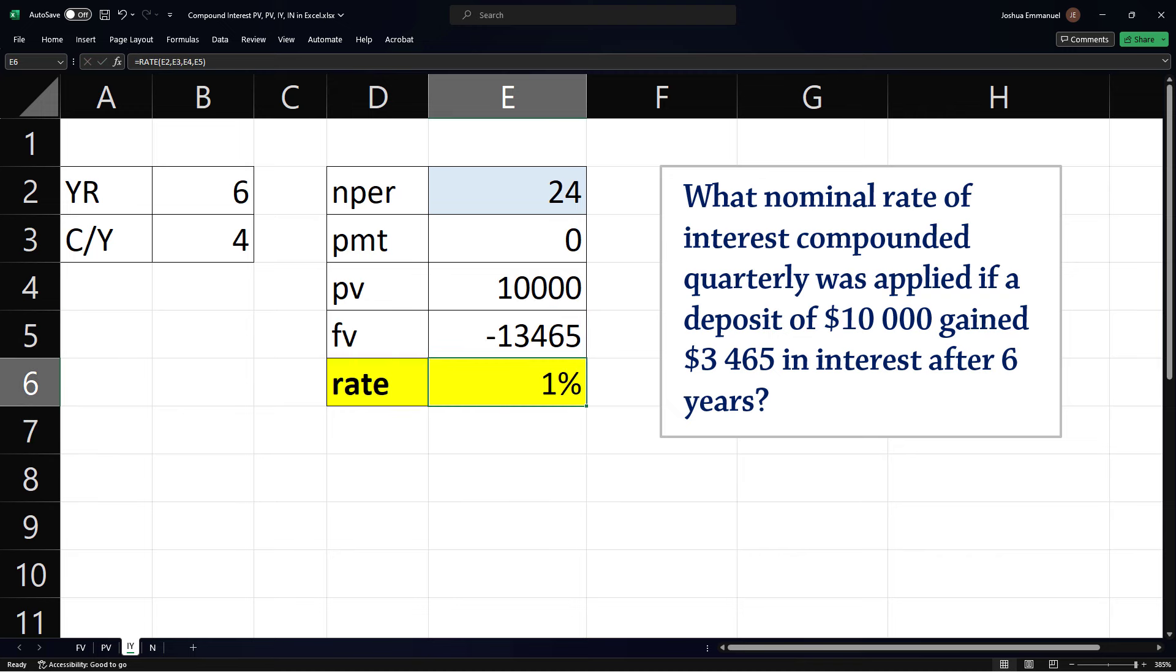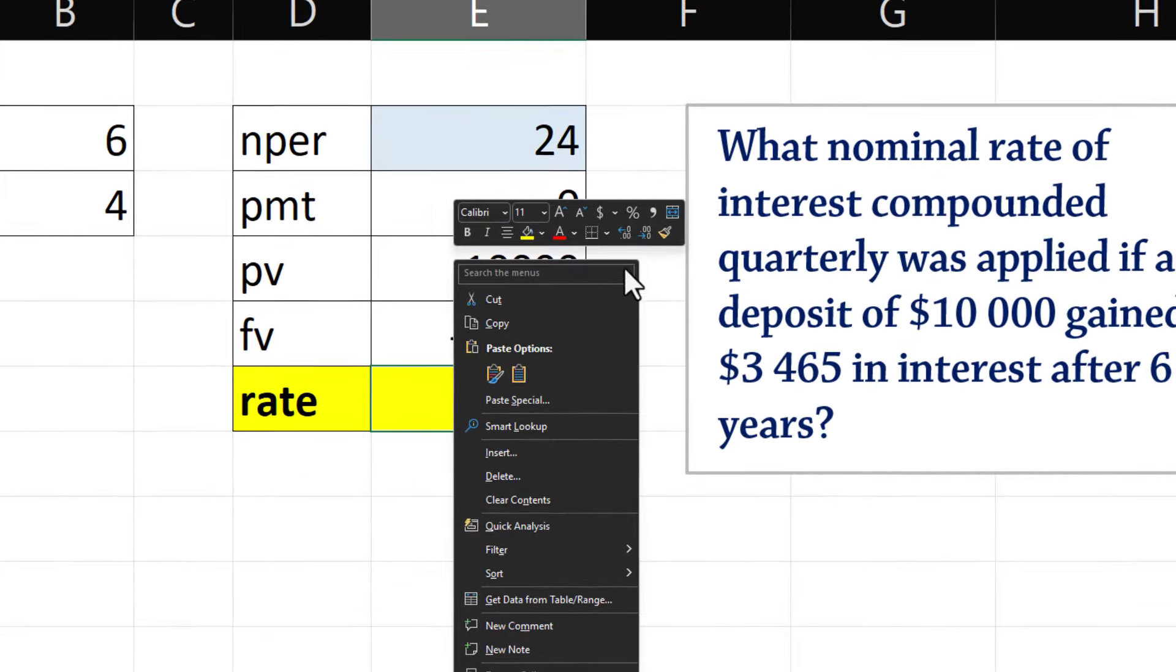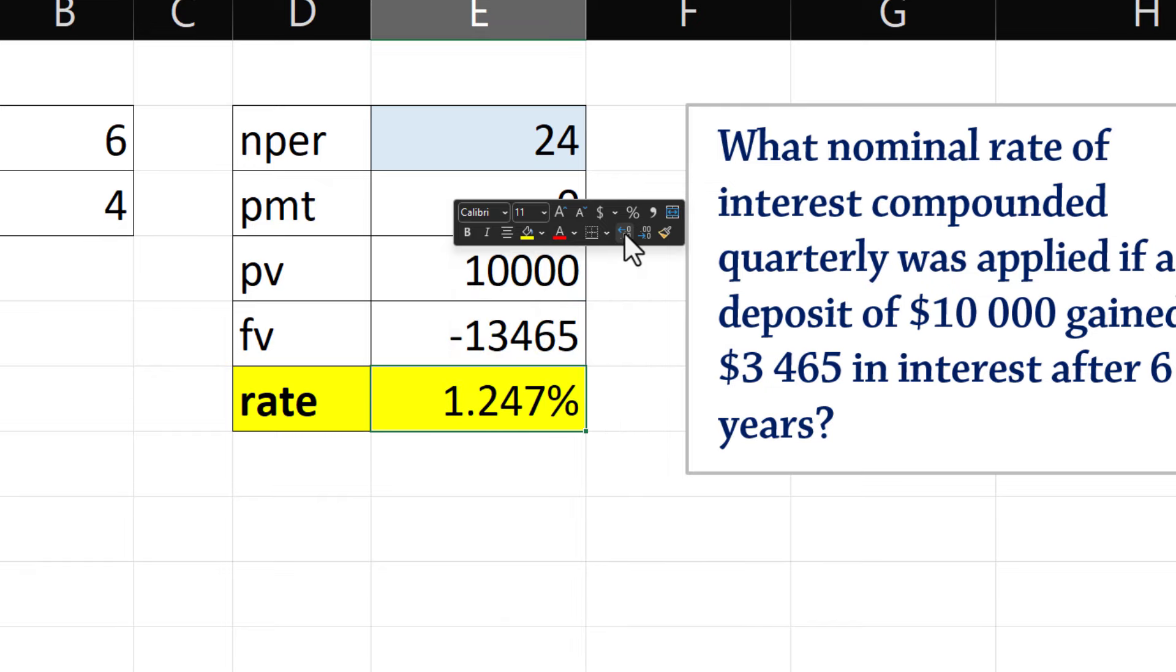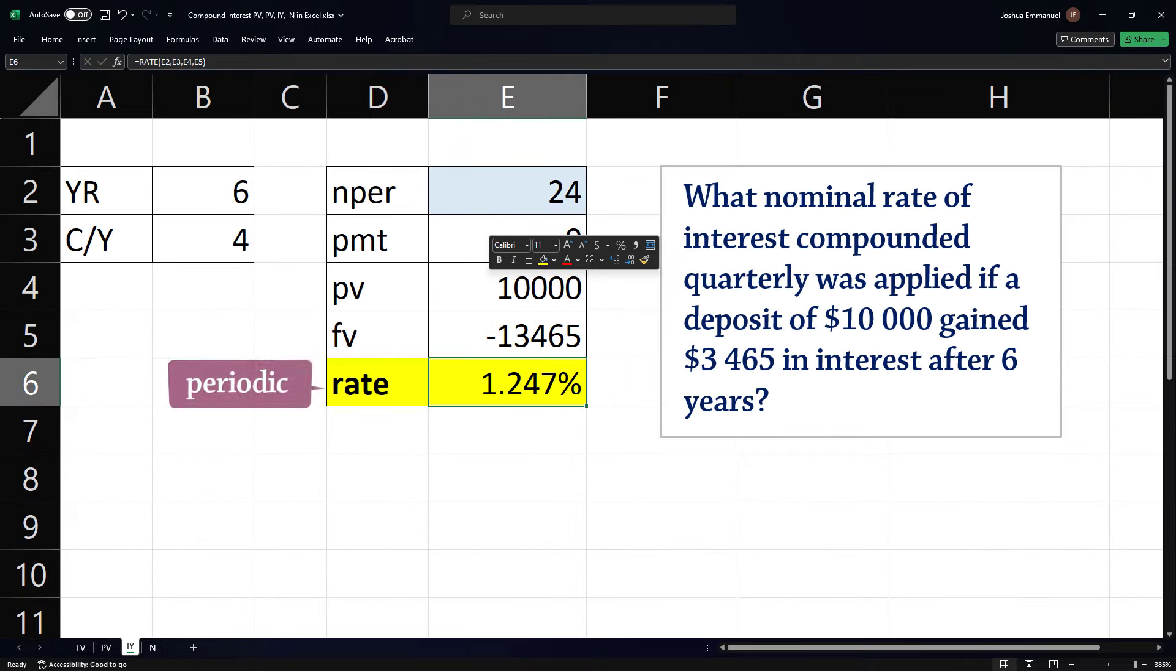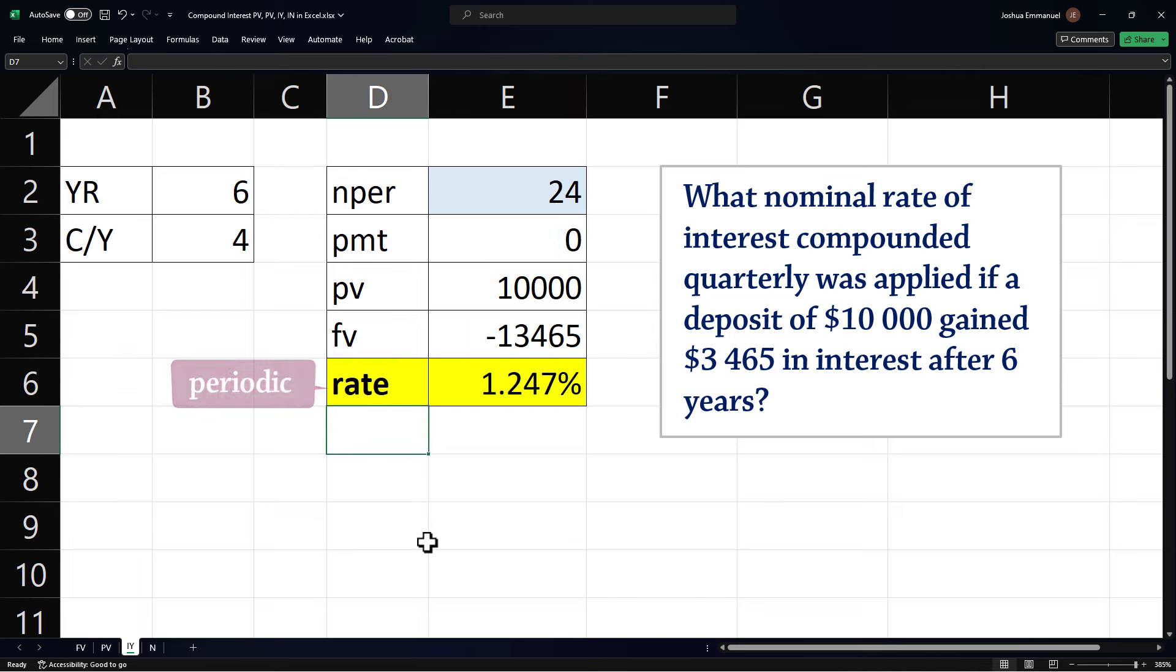it gives us the rate to the nearest percent. To reveal more decimal places, I'll right-click on the cell and click increase decimal a few times. Now, this is the periodic rate. To find the nominal rate IY, we take the periodic rate and multiply it by CY. So the nominal interest rate is 4.99% compounded quarterly.